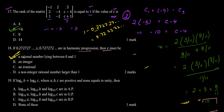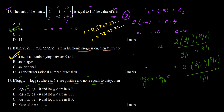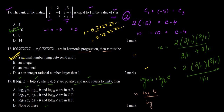Moving on to question 19. It says: if log base a of b equals log base b of c, where a, b, c are positive and none equals unity, then log base 10 of a, log base 10 of b, and log base 10 of c are in GP, HP, AP, or none of these? Using the change of base formula: log base a of b equals log b / log a, and log base b of c equals log c / log b, all in base 10.